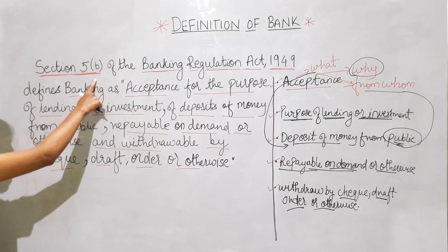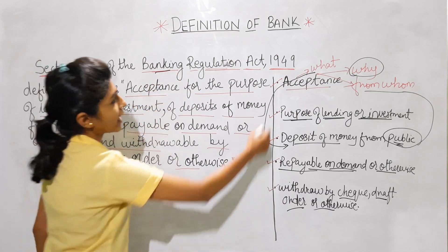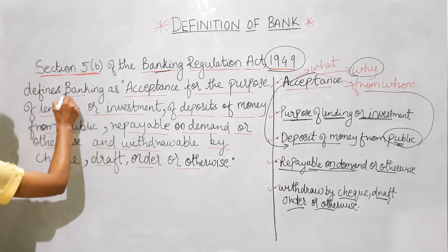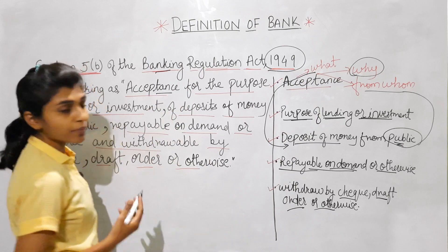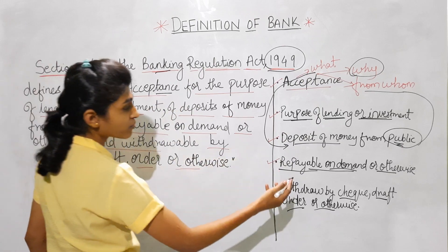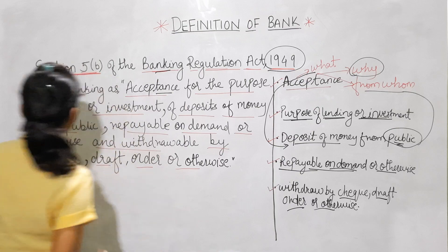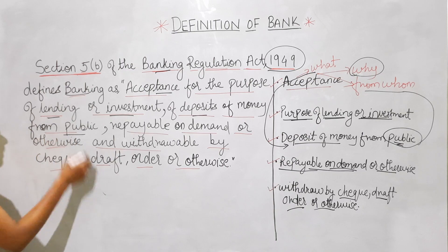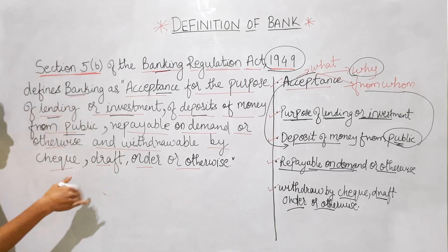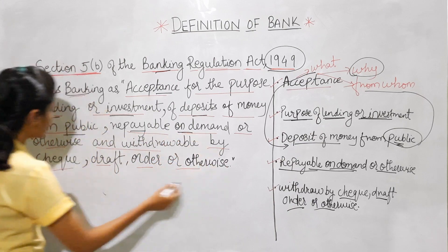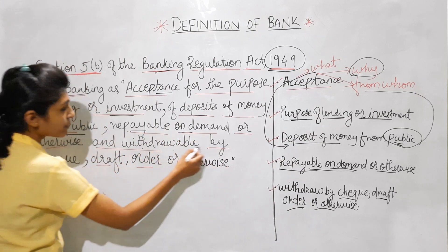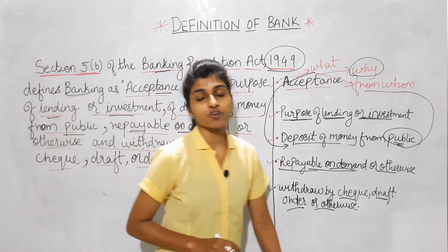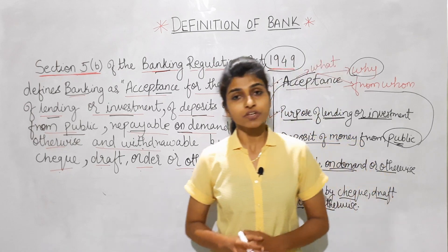According to Section 5B of Banking Regulation Act 1949, banking is defined as acceptance — the bank accepts deposits of money from the public for the purpose of lending or investment — and the same deposits of the public the bank repays on demand or otherwise, and they are withdrawable by check, draft, order or otherwise. I hope you have understood the definition of bank.